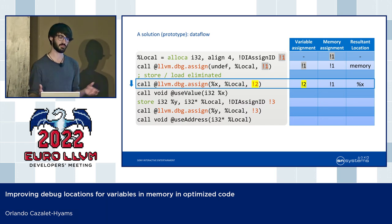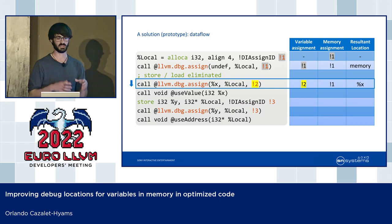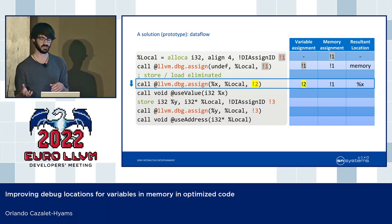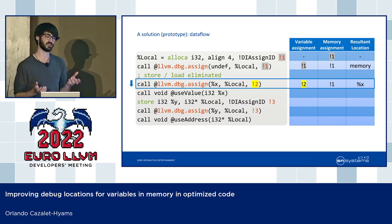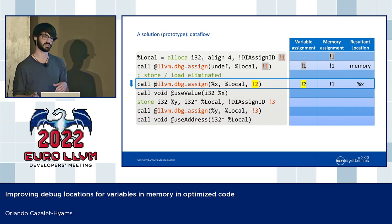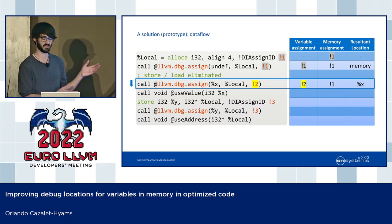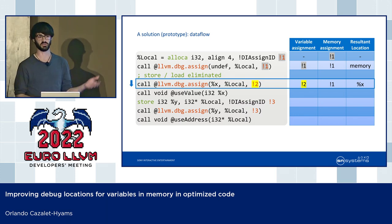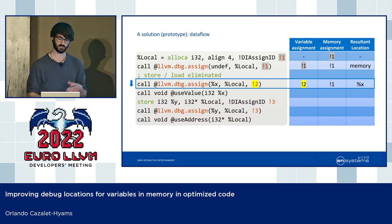We take all this new information into a new pass — a data flow analysis that runs after all the optimizations are complete. The data flow analysis aims to answer, for each variable in the program at each instruction: does the last assignment to memory match the last assignment to the source variable as recorded with our debug assign intrinsics? If it does, we can use the memory location at that point in the program; if it doesn't, we'll use the value of the last assignment if it's available.